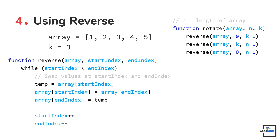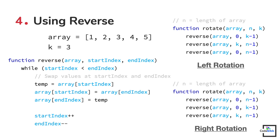We will get the k times left-rotated array after this step. If you want to right-rotate the array k times instead, you need to reverse the entire array first, then reverse the first k elements, and finally reverse the last n minus k elements. After this step you will get the required output.